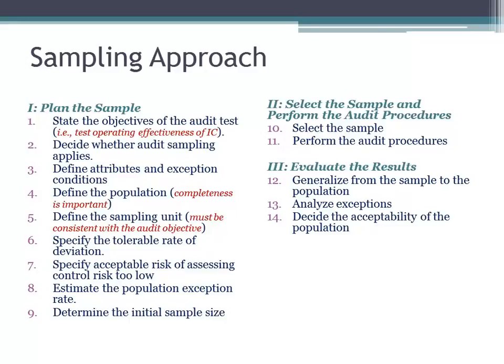Estimate what the population exception rate is. You expect there's going to be some exception rate based on prior experience, based on what you know about the client, and from testing internal controls in the prior period. Then you estimate what that population exception rate is, so you know there's some built-in exceptions anticipated. From that, you determine the initial sample size. This is where the AICPA tables come in — you plug in these criteria and they give you what your sample size should be. That's your planning of the sample.